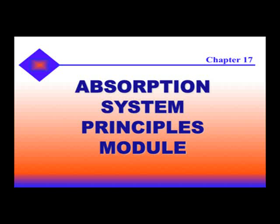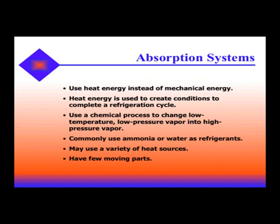In Chapter 17, we're going to be talking about absorption systems principles. Absorption systems use heat energy instead of mechanical energy to create cooling. Heat energy is used to create the conditions to complete a refrigeration cycle. A refrigeration cycle consists of being able to reject heat into an area we want it or to an area that's less harmful, and absorb heat from an area we wish to cool. It uses a chemical process to change the low-temperature, low-pressure vapor into a high-pressure vapor.